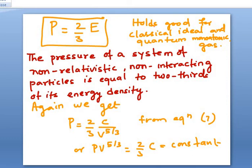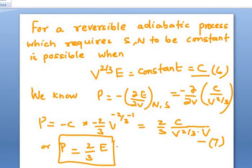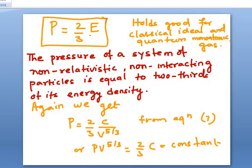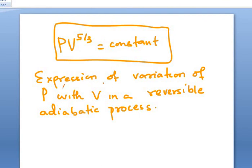This pressure is P = 2/3 E/V and it holds good for classical ideal gas and quantum monoatomic gas. So here both classical ideal gas and quantum monoatomic gas, this expression holds good. That is, pressure of a system of non-relativistic, non-interacting particles is equal to two-thirds of the energy density. Again, we know we have written P = 2/3 C/V^(5/3). So bringing V to the left hand side, PV^(5/3) = 2/3 C, which is also a constant. Finally, PV^(5/3) = constant, which is the expression of variation of P with V in a reversible adiabatic process.